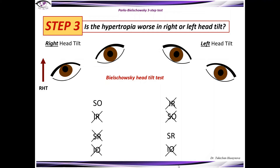Step 3: Is the hypertropia worse in right or left head tilt? This is the Bielschowsky head tilt test. As we can see here, left head tilt doesn't show any abnormalities, but right head tilt shows a hypertropia of the right eye. Right tilt induces intorsion of the right eye and extorsion of the left eye. Normally, the two intortors and the two extortors of each eye have opposite vertical actions that cancel or neutralize one another. If one intorter or one extorter is weak, the vertical action of the other ipsilateral torting muscle becomes manifest during the torting response to head tilt.